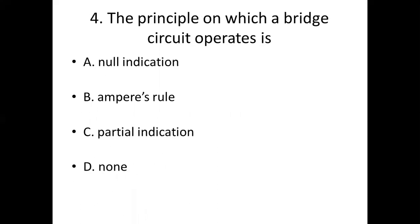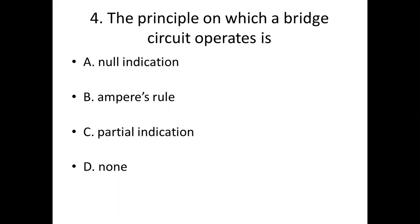Fourth bit. The principle on which a bridge circuit operates is? Option A: null indication. Option B: Ampere's rule. Option C: partial indication. Option D: null. Answer: Option A, null indication.